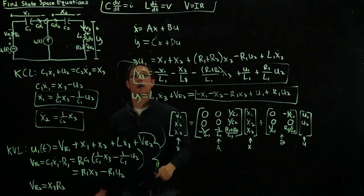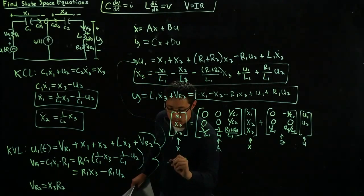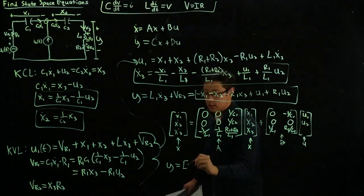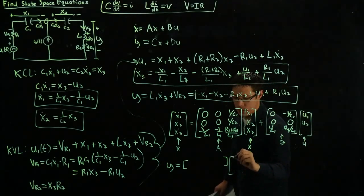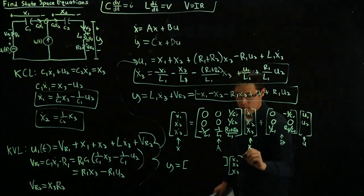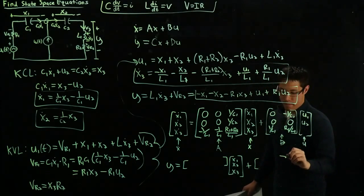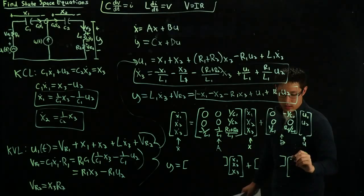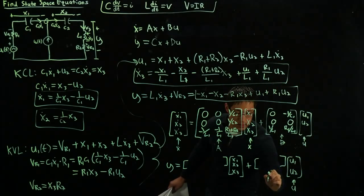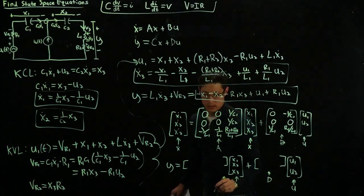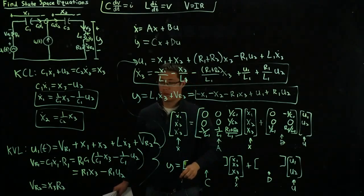Last thing we need to do is write our output equation. So y is a scalar value in this case, because we only have y, equals our C vector, which is multiplied by [x1, x2, x3], and is added with the D vector and the input [u1, u2]. So again, this is u, this is D, this is x, and this is C, and of course, this is y.